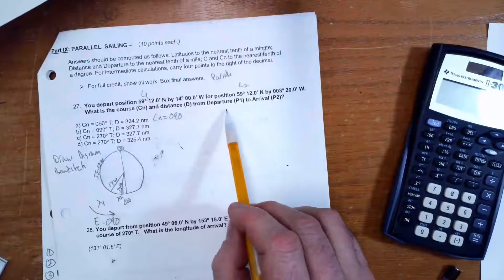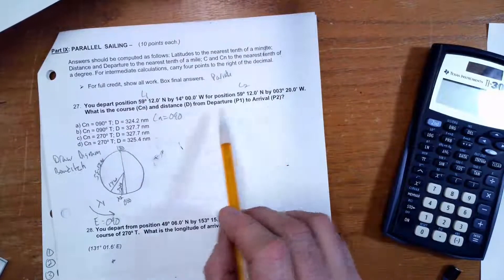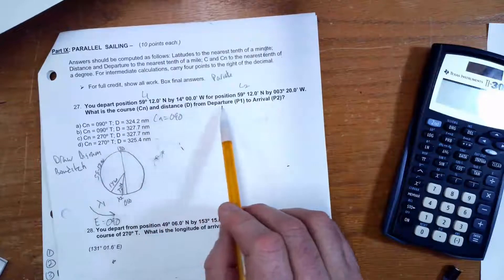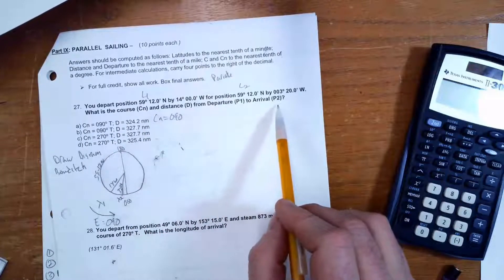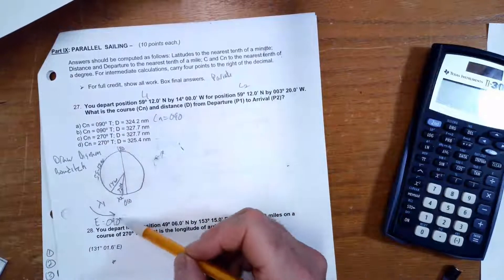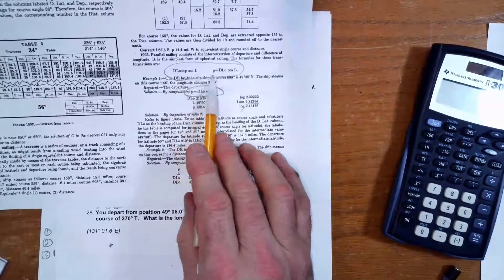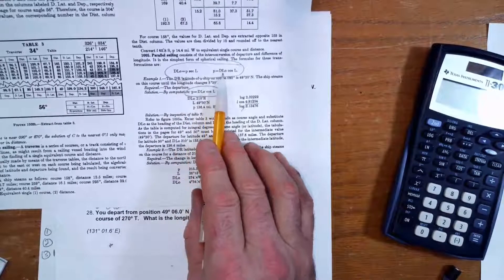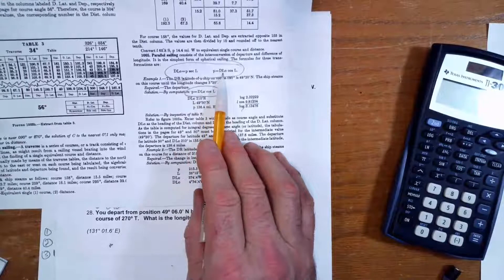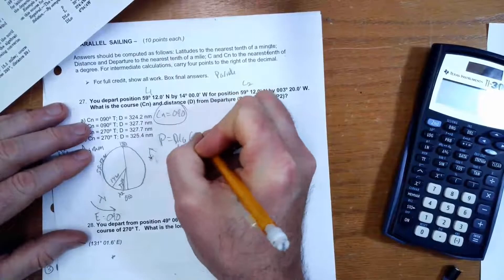In this problem, they're asking us to find the course and the departure, the distance between point 1 and point 2, and departure is in miles. So we already found the course, that was 090°, so now we have to find departure. Here are the two formulas. P is departure, this is the formula we need: P equals DLo times cosine L.